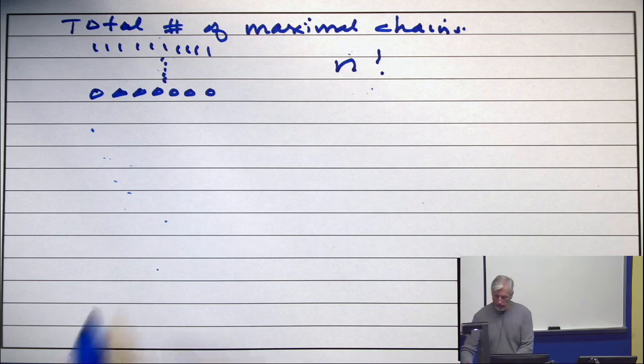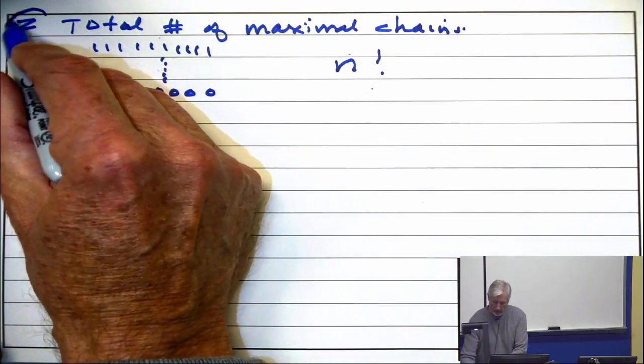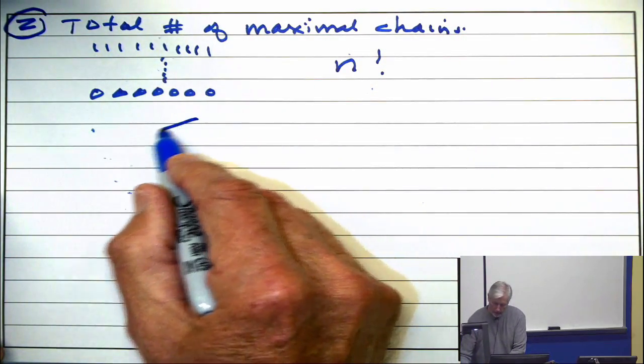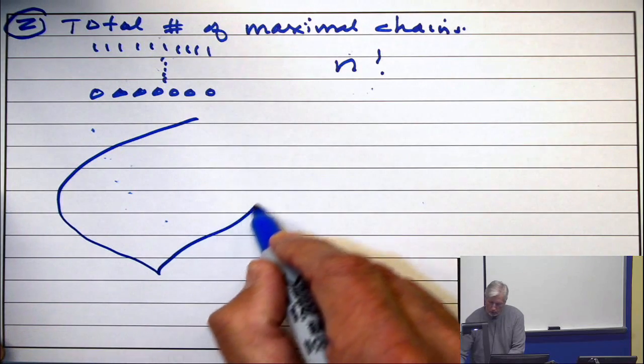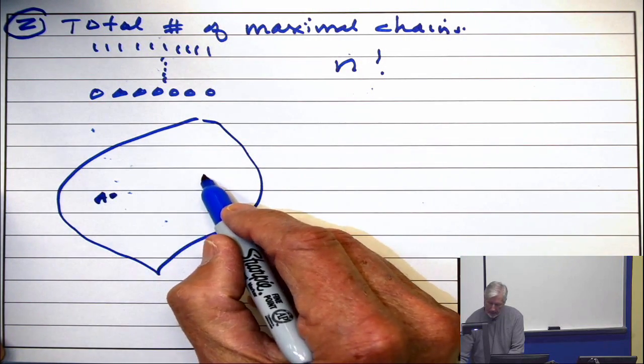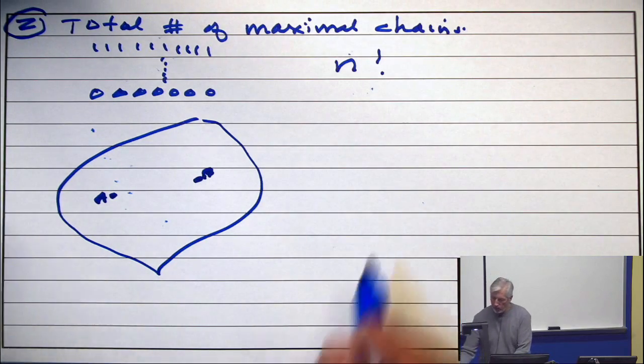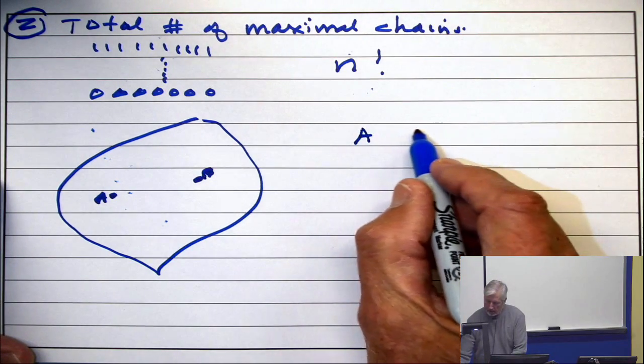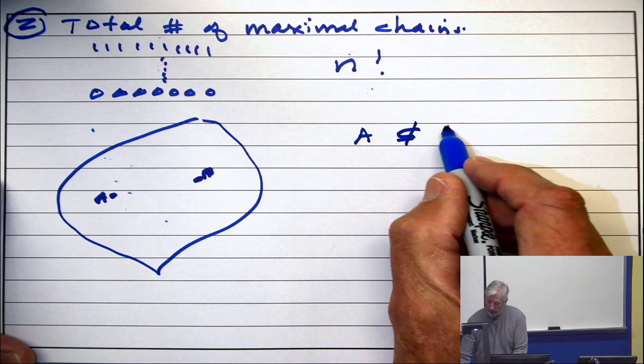All right? That's detail two. Here's detail three. Suppose you have two sets, A and B, and neither of them is a subset of the other.